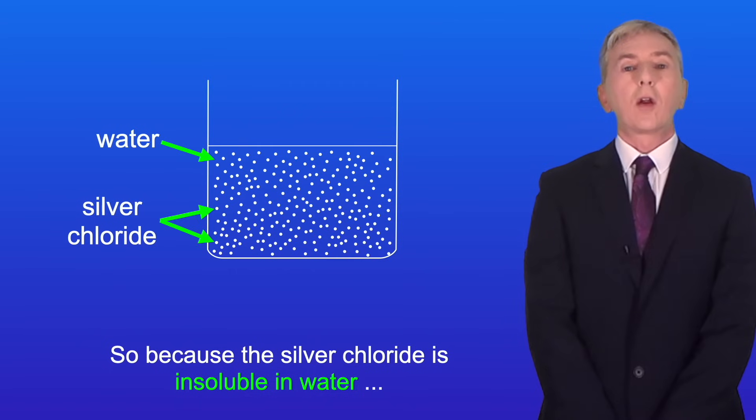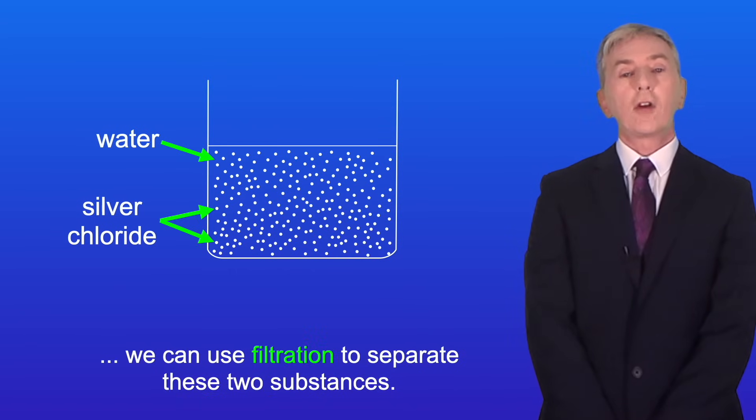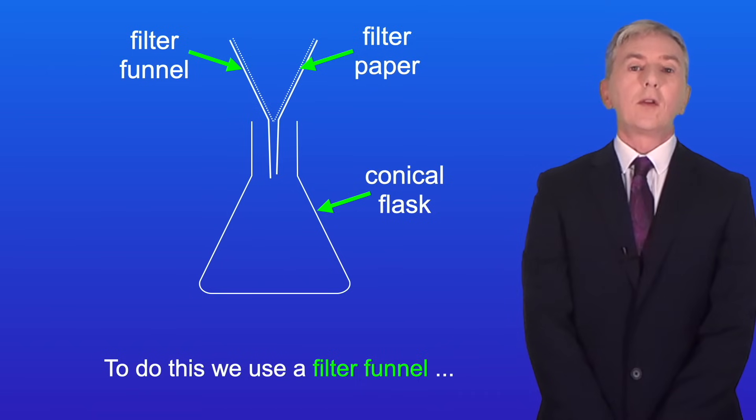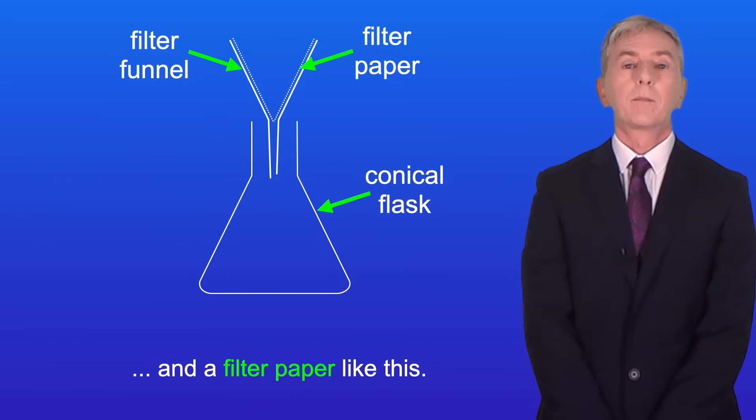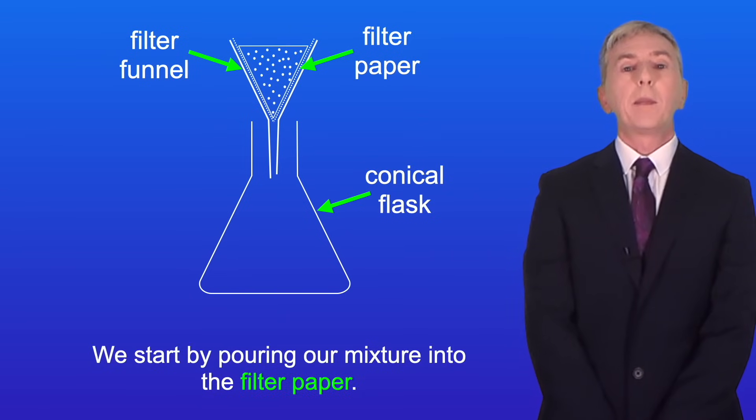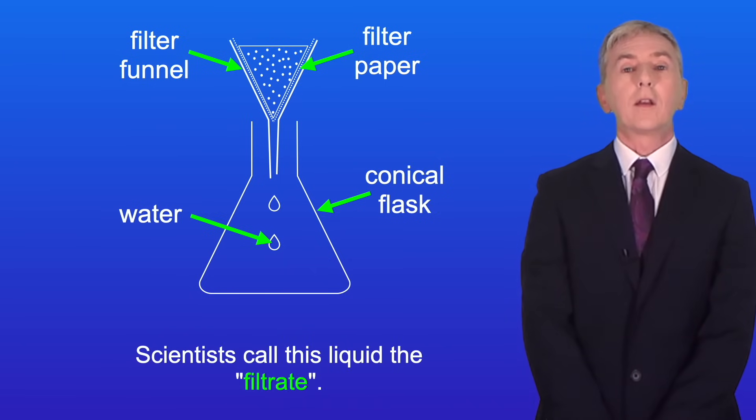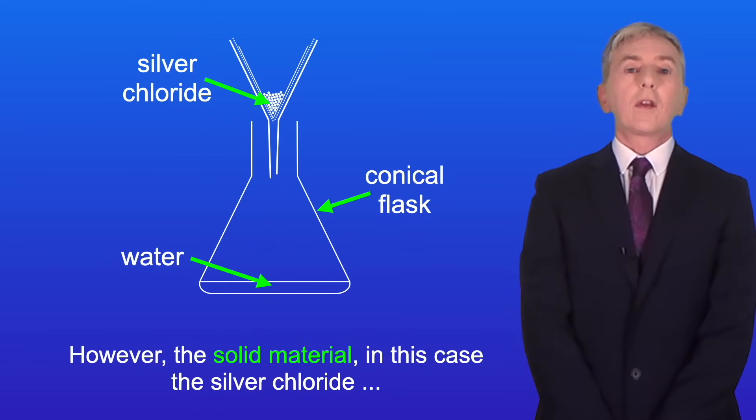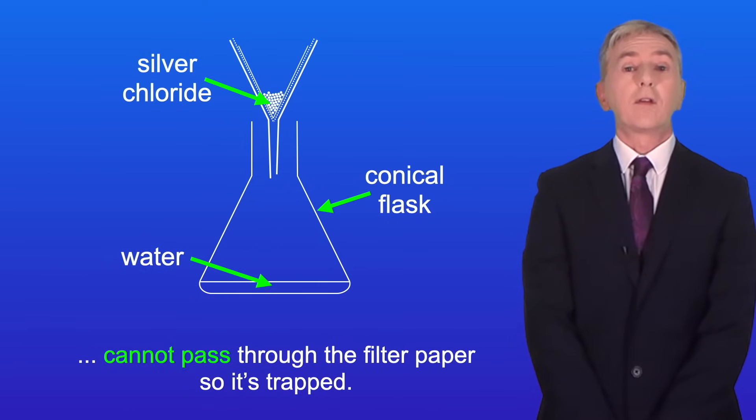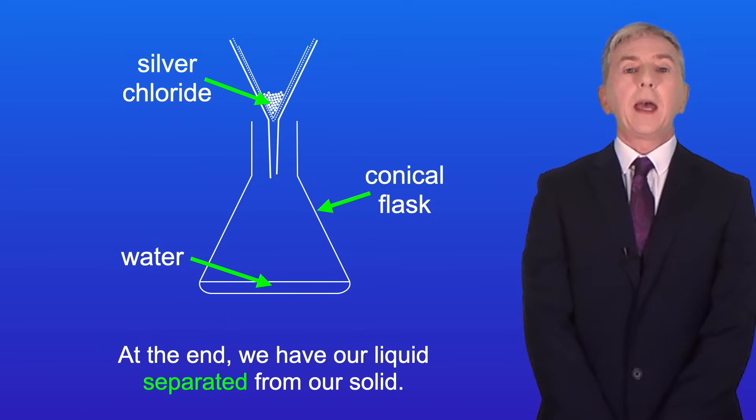Because the silver chloride is insoluble in water we can use filtration to separate these two substances. To do this we use a filter funnel and a filter paper like this. We start by pouring our mixture into the filter paper. The liquid, in this case the water, passes through the tiny pores in the filter paper and scientists call this liquid the filtrate. However the solid material, in this case the silver chloride, cannot pass through the filter paper so it's trapped. At the end we have our liquid separated from our solid.